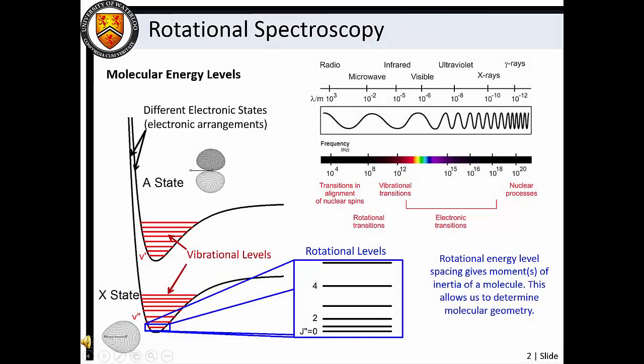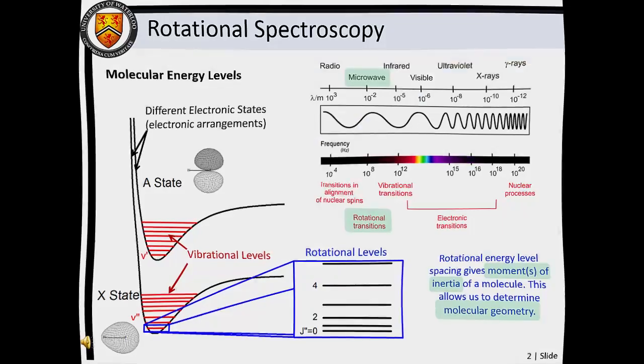Rotational spectroscopy detects transitions between the quantized rotational levels of molecules. Owing to the fact that these energy levels are very closely spaced, transitions require a relatively small amount of energy. For this reason, rotational spectroscopy usually employs light in the microwave region of the spectrum. Rotational energy depends on molecular moments of inertia, which in turn depend on molecular geometry. Thus, rotational spectroscopy is our most accurate tool for deducing molecular structure.